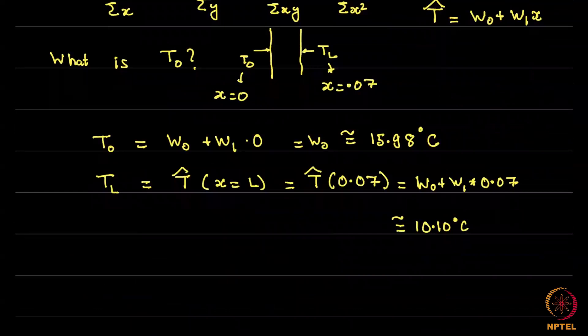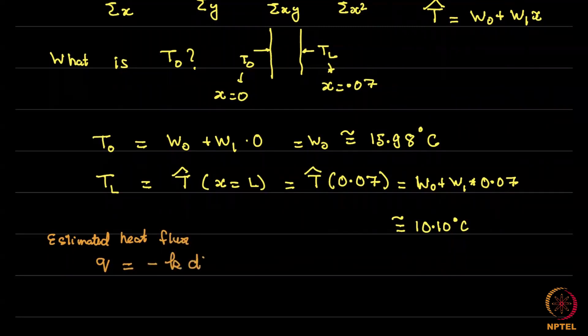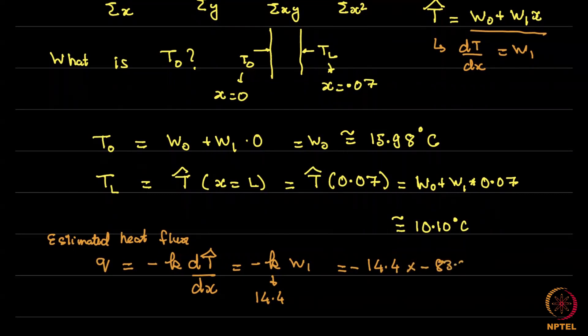Now finally, the all important question really speaking for a heat transfer engineer is what is the estimated heat flux? So the estimated heat flux q is minus k dt/dx. Now T hat is w0 plus w1x. This tells us that dt/dx equal to w1. So this is minus k times w1. The value of k is given within the question to be 14.4. So if you actually plug this in, you will get approximately 1208.4 watt per meter square. So this is the estimated heat flux.